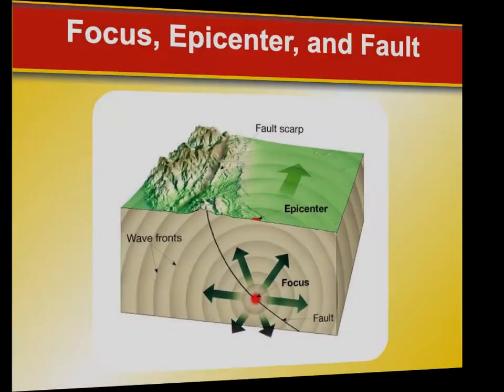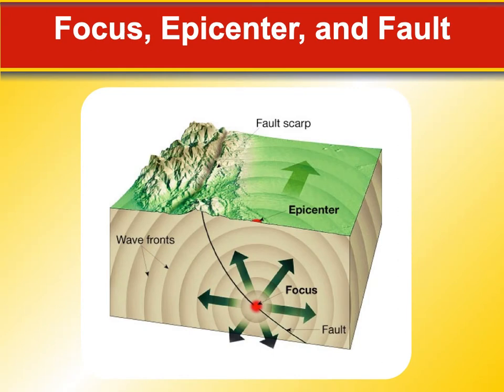Looking at a diagram, the epicenter is the red dot on the surface, and directly beneath it underground is the focus. The fault itself may go at an angle rather than vertically, so somewhere along that fault line is where the slippage actually occurred. The seismic waves then spread out in a circular pattern from that point in all directions. The fault scarp is the chain of uplifted material along the fault that slid.